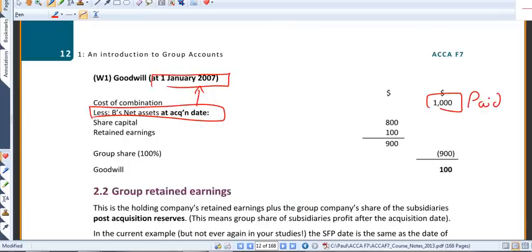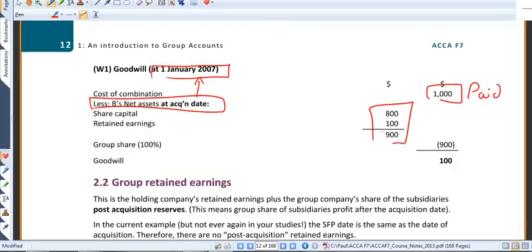So, keep your eye on the 800 and the 100. You'll see that it's those figures that appear here to work out B's net assets at the date of acquisition. This tells us that B was worth 900 at the date of acquisition.